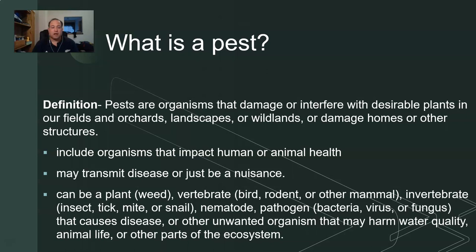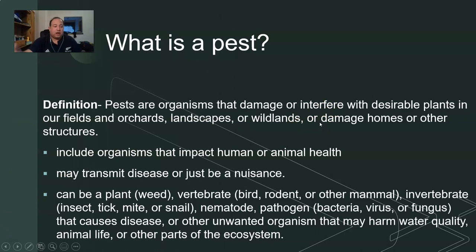Invertebrate organisms are the ones we are most used to when we think of pests — insects, ticks, mites, snails. There are also nematodes, pathogens like bacteria, viruses, and fungi that cause disease, or any other unwanted organisms. Things that may harm water quality, animal life, or any parts of the ecosystem are pests. Anything interfering with what we consider desirable — for us in natural resources, that's a healthy ecosystem — those are our pests.